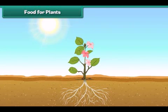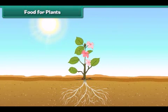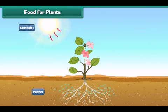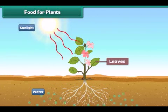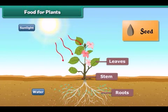Let us now understand where plants get their food. Plants make their own food with the help of sunlight. Plants take water from the soil and prepare food in their leaves. The plant uses some part of the food and the rest is stored in its roots, stem, leaves, and seeds.